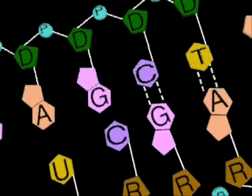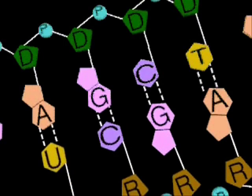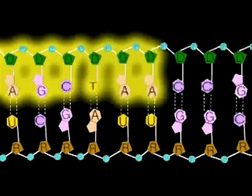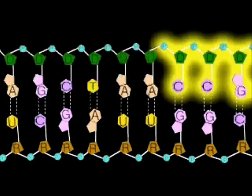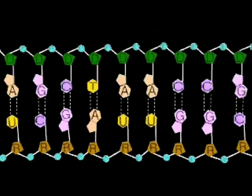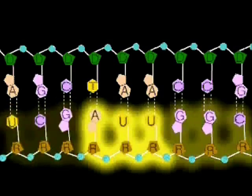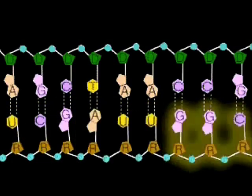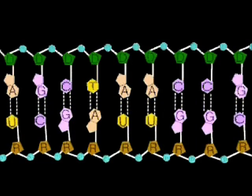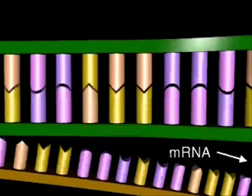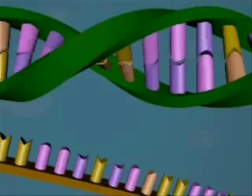Thus, if the sequences of the codons on the DNA strand were AGC, TAA, and CCG, the sequence of the codons on the RNA strand would be UCG, AUU, and GGC. When base pairing is completed, the mRNA molecule breaks away as the DNA strands rejoin. The mRNA then leaves the nucleus and enters the cytoplasm.